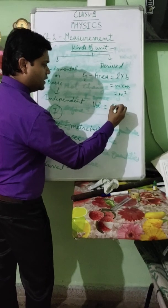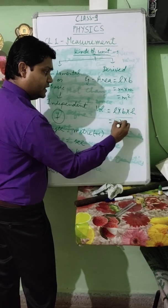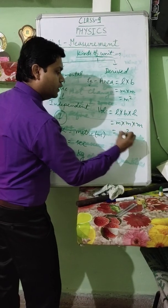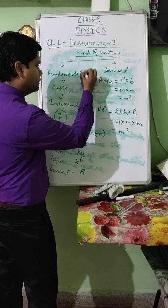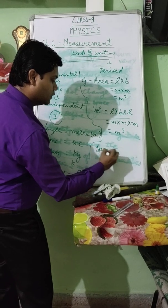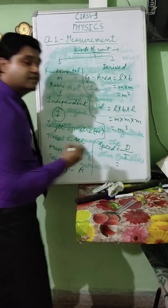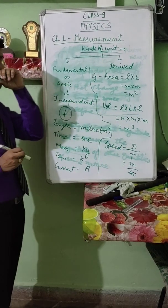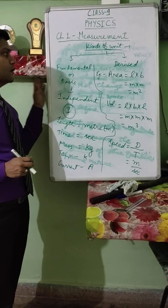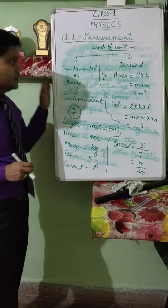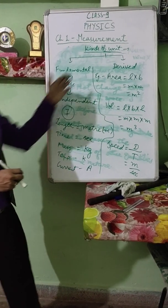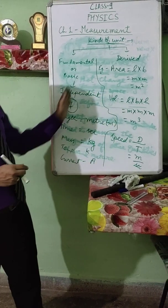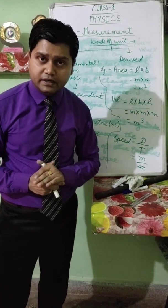Volume equals length into breadth into height — metre into metre into metre — so the standard unit of volume is metre cubed. Speed equals distance upon time — distance is a type of length, so its unit is metre, and time is second — giving metre per second. Derived quantities are much more numerous than fundamental quantities. Fundamental quantities are independent in nature, whereas derived quantities are totally dependent on fundamental quantities. Without fundamental quantities, we cannot derive units for derived quantities.